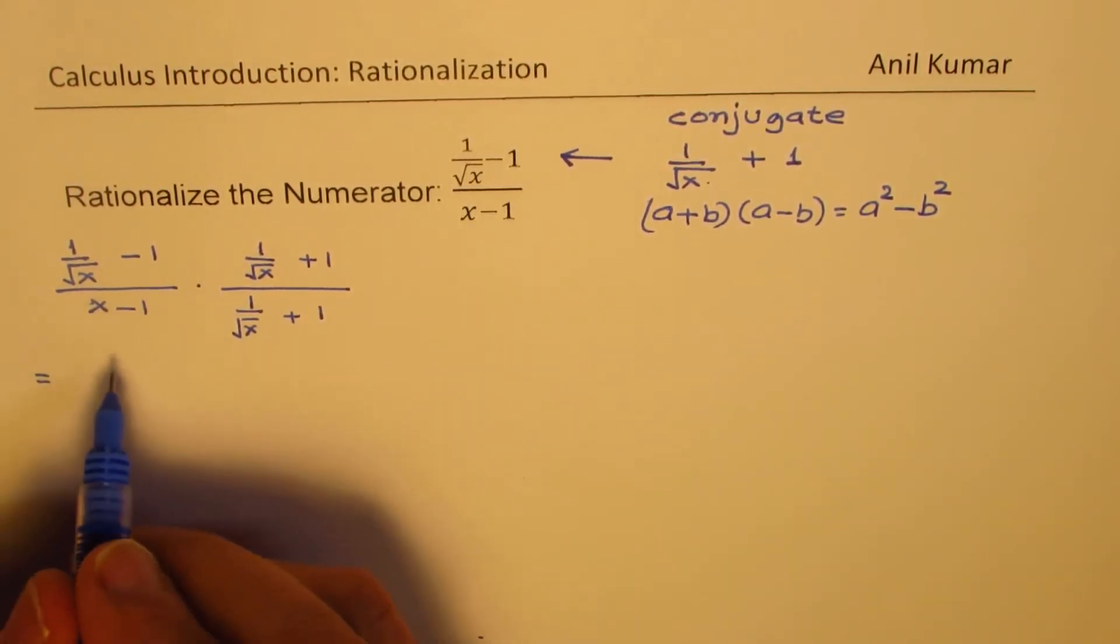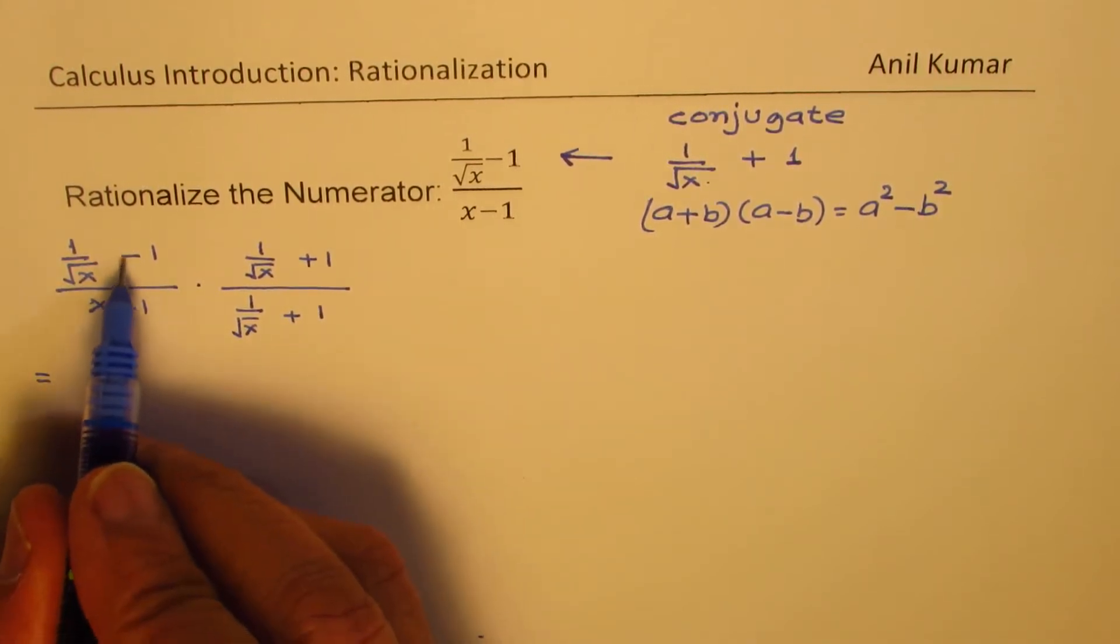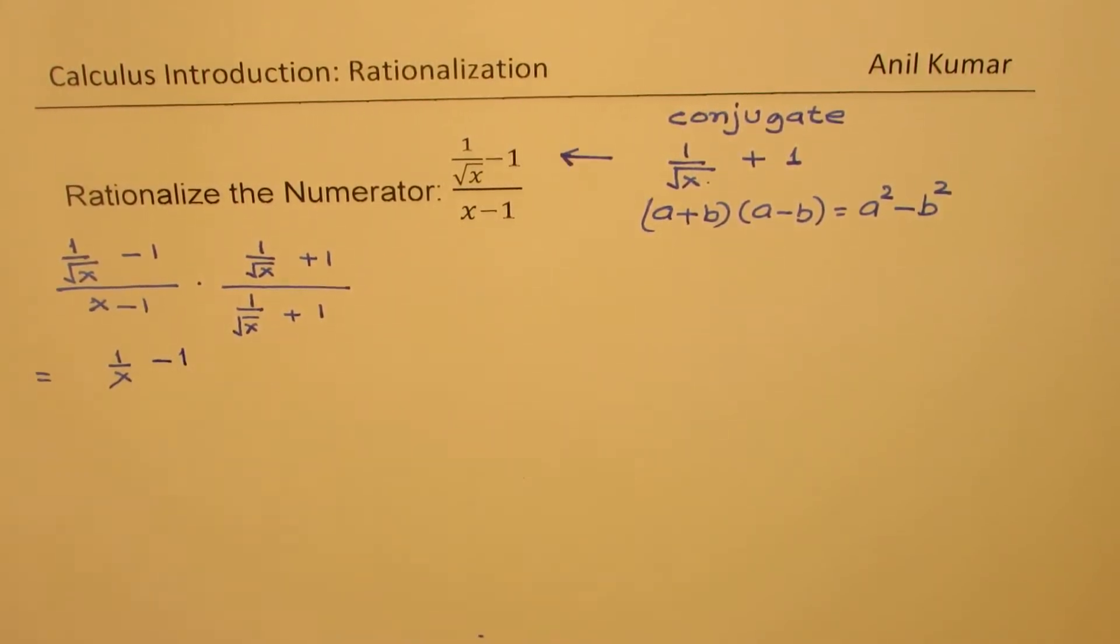You get the square of the first term and the square of the other term, and that is the difference of squares. So the numerator you get is 1 over x, which is square of square root x. Strictly speaking, it is absolute value of x, minus 1.